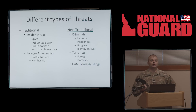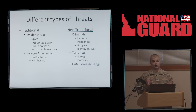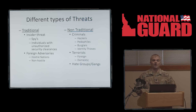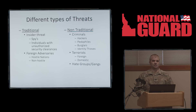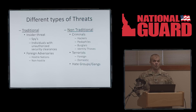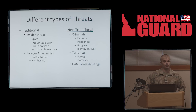There are different types of threats, typically broken down into two categories: traditional and non-traditional. Traditional threats are going to be governments — different governments of the world. Insider threats involve spies, and could essentially even be ourselves — individuals with unauthorized security clearances. This also includes foreign nations, both hostile and non-hostile. Believe it or not, non-hostile nations try to obtain information from us, and even though they may not be hostile, we still restrict them because it's important that we guard our information.